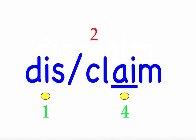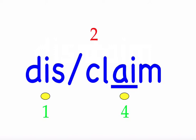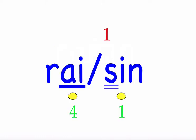The next word is 'raisin.' The raisin fell out of my cereal bowl. First syllable 'rai' — two sounds, R-A-I. Second syllable 'zin' — three sounds, Z-I-N. Mark the word. Raisin.